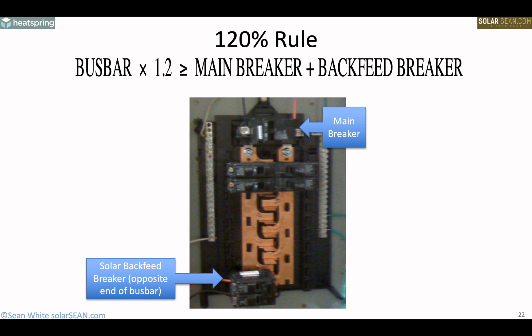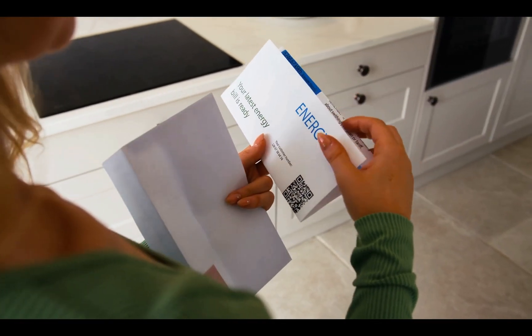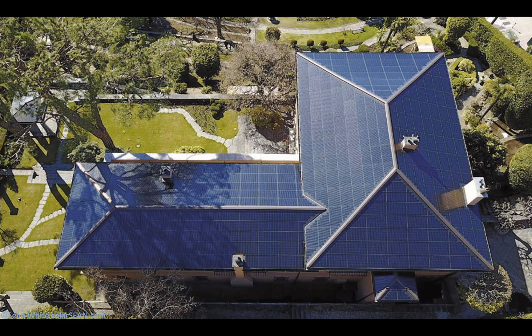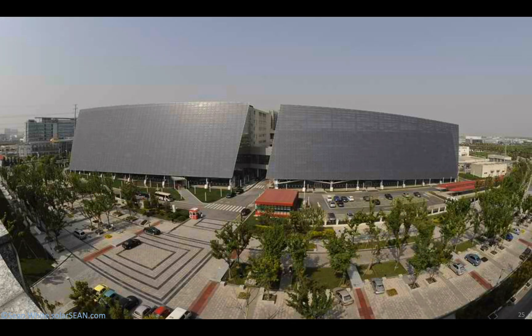Try using the term '120% rule' at the next solar PV cocktail party you go to. Building integrated photovoltaics is pretty, but it still might not be a pretty good investment — you might be paying triple for your electricity, though it sure looks neat. This is a picture of a PV system in Germany where there are extra incentives for building integrated photovoltaics. And here I am next to the biggest BIPV array in the world in 2009, near Shanghai — and it's still the biggest BIPV array in the world.